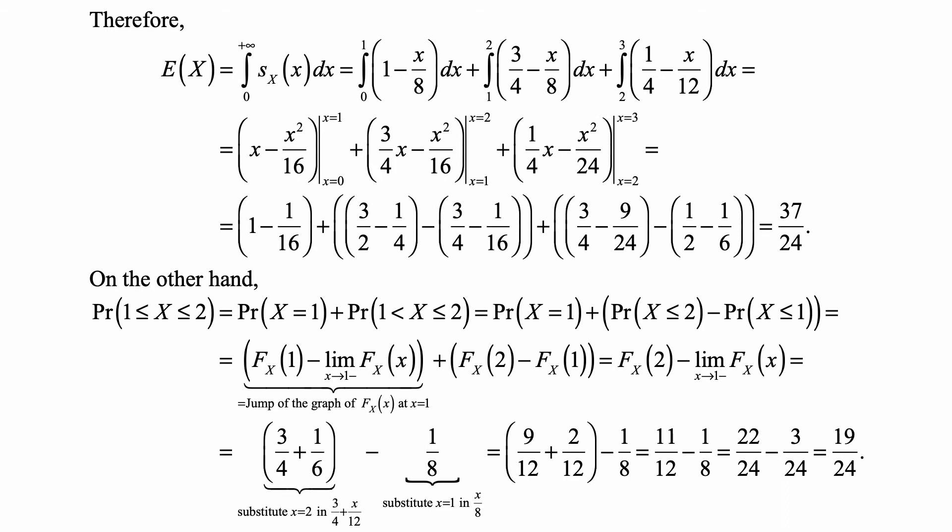The only question is what is the probability that X is 1? And at 1, this cumulative distribution function has a jump. And so the probability of hitting that point exactly is that jump. And the jump is equal to F_X(1) minus the limit from the left-hand side as x approaches 1 of F_X(x).